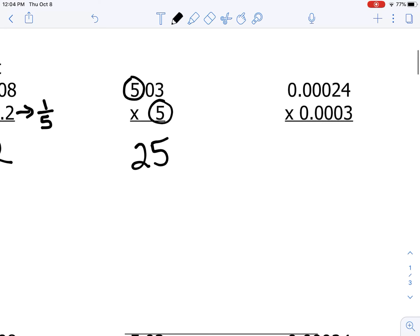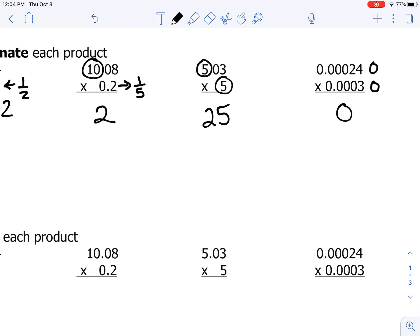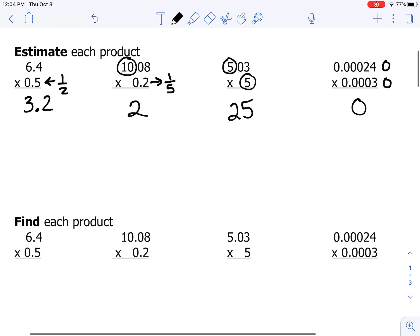And our last one, you're going to have to round both of these numbers to zero, and we end up with zero. We'll see if our number is pretty close to zero. So let's go ahead and do the actual multiplication for each one of these.